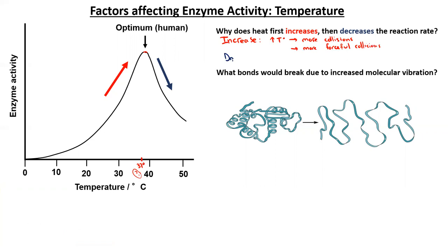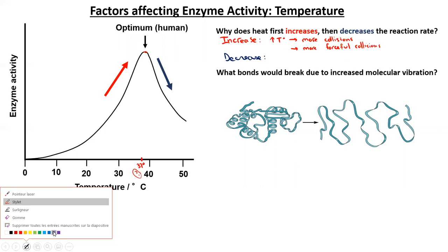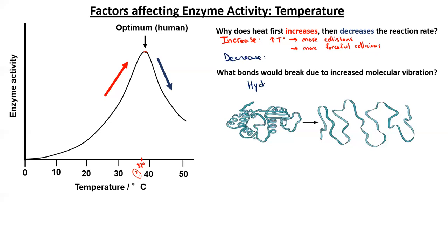But what about the decrease? Here we can get a little bit of help from the following image and the question: what bonds would break due to increased molecular vibration, increased kinetic energy due to higher temperature? Well, what are those bonds that relatively easily can break? Typically, the hydrogen bonds would break easily with increased temperature. And if the hydrogen bonds break, that's going to cause the molecule to change shape. We're looking at an enzyme here, so it's going to cause the enzyme to change shape. Those hydrogen bonds are broken — those are the bonds holding the whole molecule in three dimensions together. So now the enzyme unravels and becomes denatured.